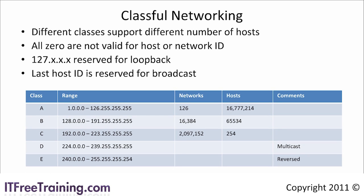Both class A and class B have a lot of hosts per network. The original system of allocating IP addresses based on class created a lot of wasted IP addresses. The class C network has 2,097,152 networks with 254 hosts per network. This network is more suitable for smaller networks. However, even if you have 100 computers on a network there is still a lot of wasted IP addresses. Class D is reserved for multicast.